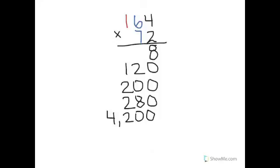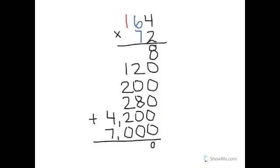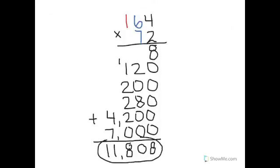And our final step is 100 times 70, which gives us 7,000. Now notice I have everything lined up, so it will be very easy to go ahead and add down at the bottom. Carrying our 1, our final answer is 11,808.